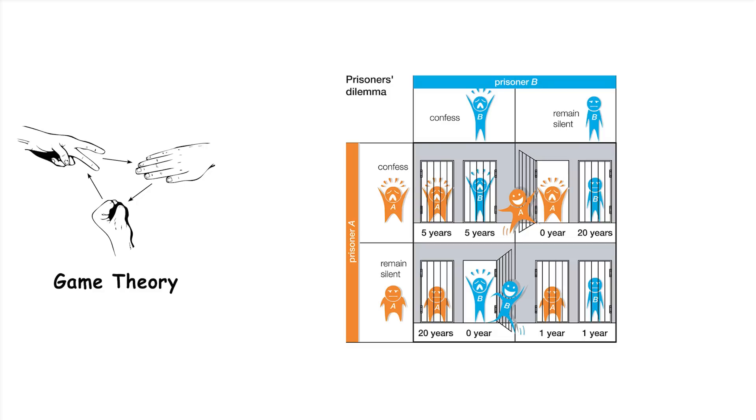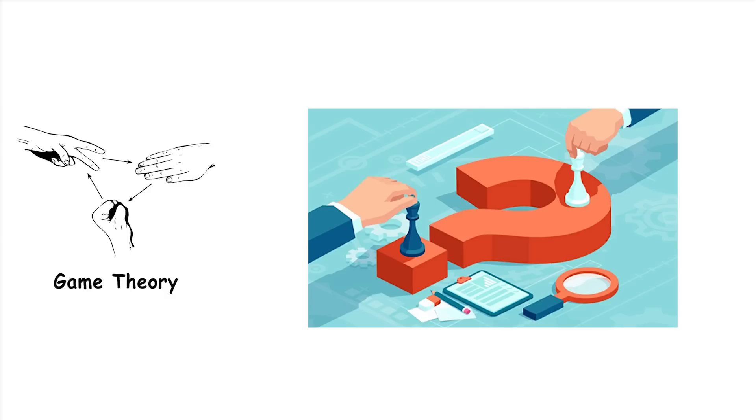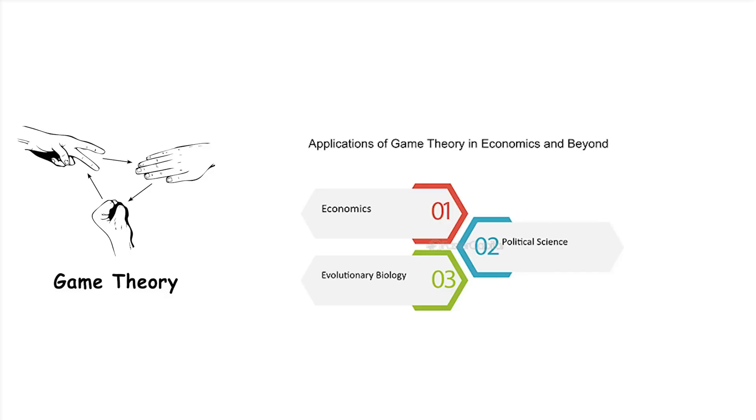Imagine you and a friend are deciding whether to watch a movie or go out to eat. Game theory helps predict what you both might decide based on your preferences and how you think the other person will decide. It's used in economics, politics, and even biology to understand decision-making.